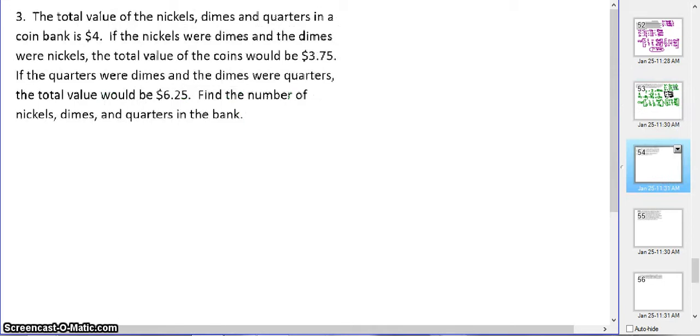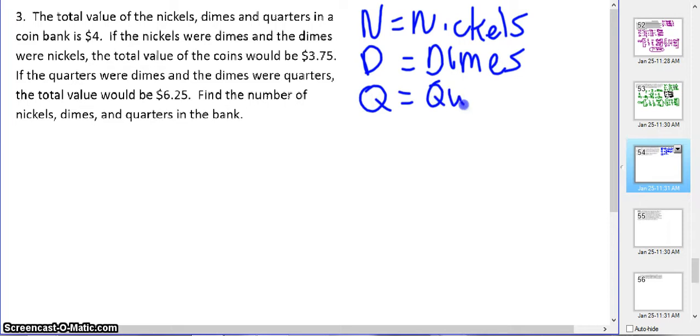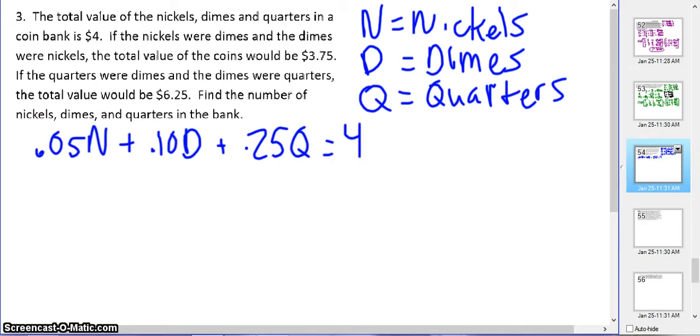Last type of question. We're going to go with some money. The total value of nickels, dimes, and quarters in a coin bank is $4. If the nickels were dimes and the dimes were nickels, the total value of the coins would be $3.75. If the quarters were dimes and the dimes were quarters, the total value would be $6.25. This is a little confusing. I'm going to use N for nickels and D for dimes and Q for quarters. So the first thing is, how much money do I have in the bank? Nickels, we got 0.05N. So we're going to put the value with our variables. 0.10D, 0.25 is Q, and the total amount of money is $4. So that's our first equation.